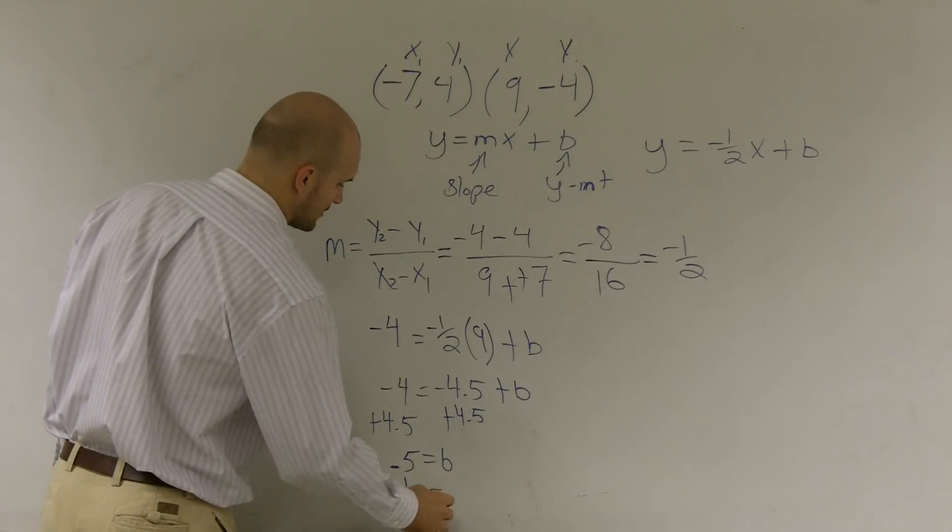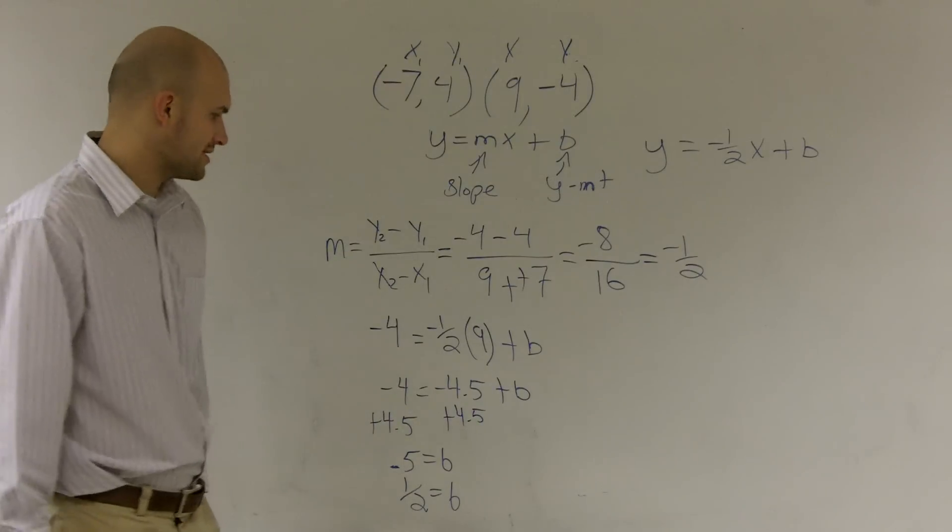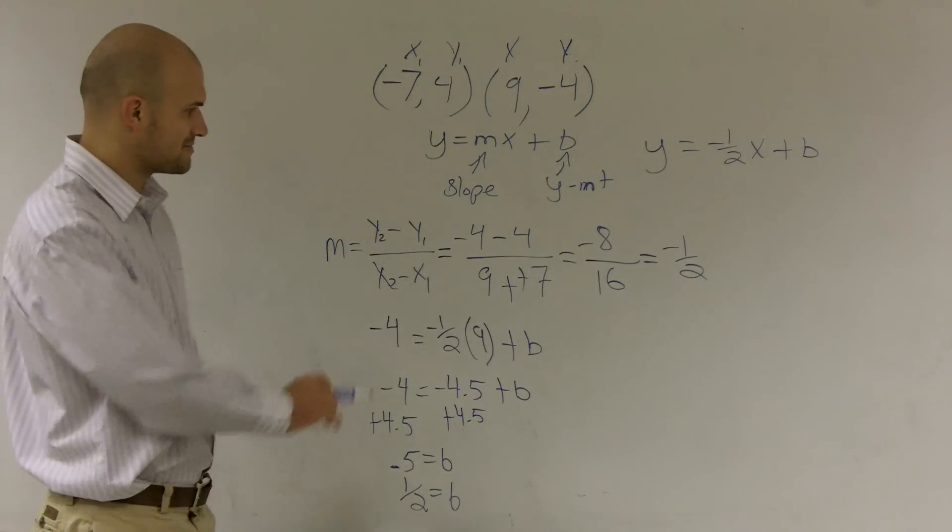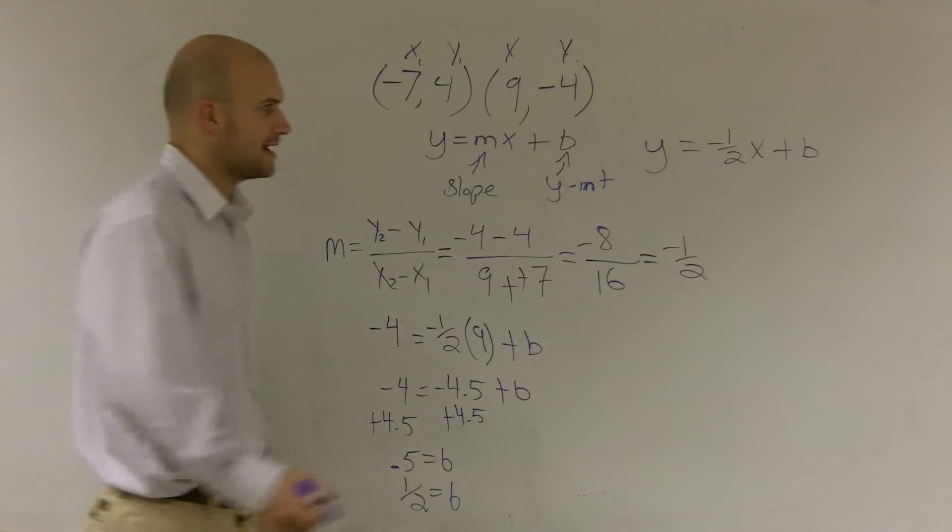Or really, 1 half equals b, right? I shouldn't have usually transferred to decimals, but it was pretty easy right there, so I decided to. So therefore, b equals 1 half.